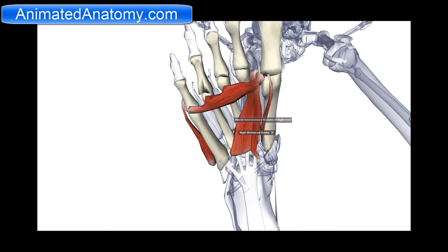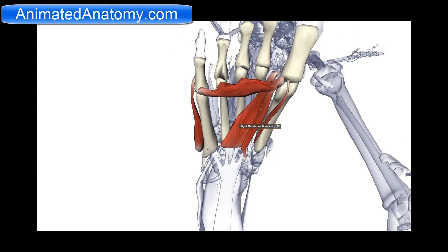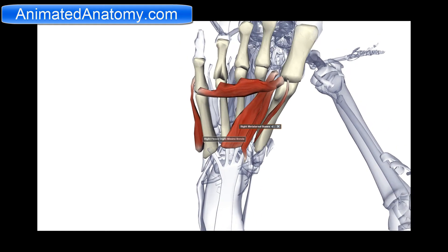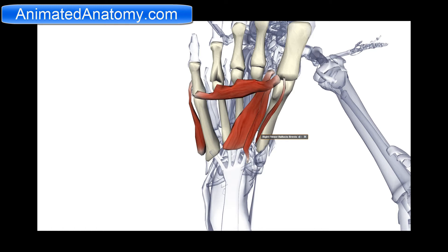The flexor hallucis brevis is obviously going to flex the hallux. The adductor hallucis is going to adduct it, and flexor digiti minimi serves for the flexion of the fifth toe. The flexor digiti minimi and the adductor hallucis are innervated by the lateral plantar nerve, while the flexor hallucis brevis is innervated by the medial plantar nerve.